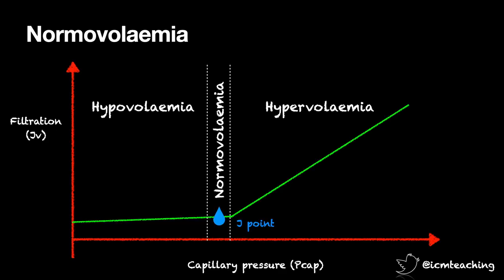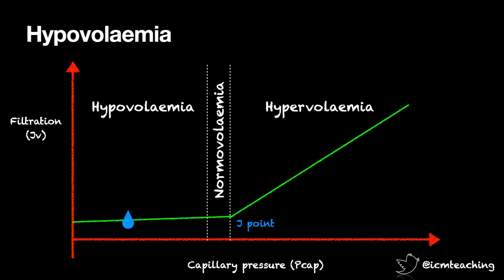So how is all this relevant clinically? Well, let's see what happens when we give IV fluid in different situations. In normovolemia, infusion of crystalloid will raise capillary pressures and reduce oncotic pressure. As normovolemia lies close to the J-point, the result will be increased filtration of fluid from the vessels into the interstitium. In hypovolemia, compensatory vasoconstriction lowers capillary pressures and filtration out of vessels ceases — this state is far to the left of the J-point. As you resuscitate the patient, the infused fluid will be retained in the vessels until the capillary pressure of the J-point is exceeded.